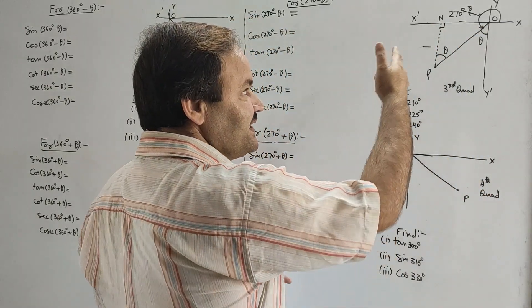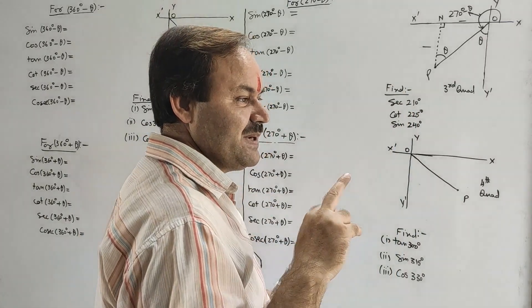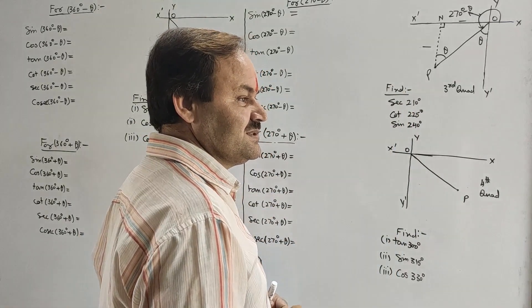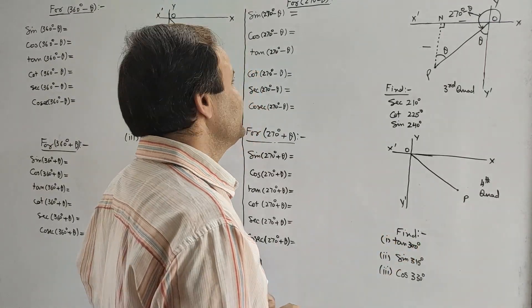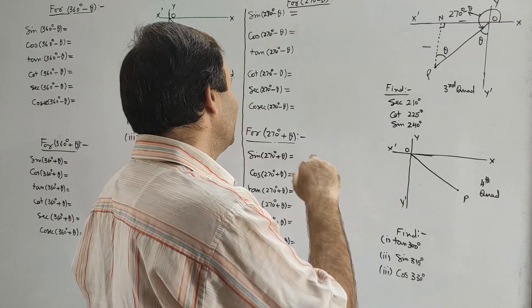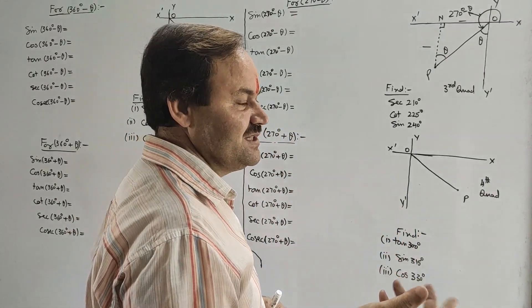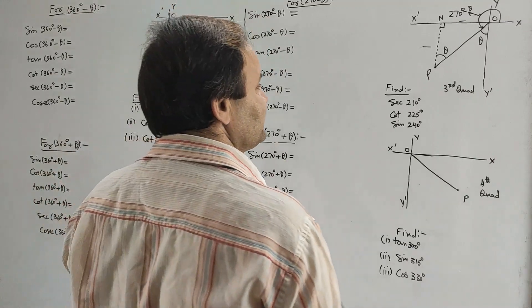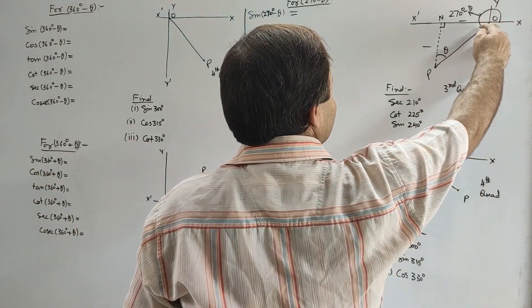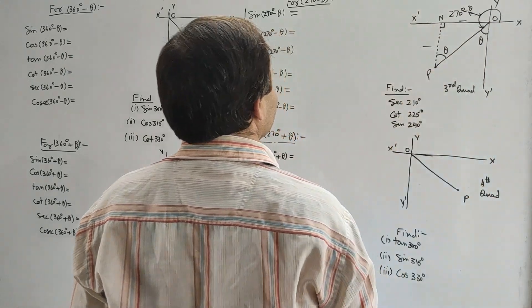Hence, in the case of 270°, perpendicular and base interchange. Due to this interchange, sin and cos, tan and cot, sec and cosec will all interchange. If we calculate sin(270° - θ), the perpendicular PN is negative, so it gives minus PN upon hypotenuse OP. For angle θ, PN is the base and OP is the hypotenuse, which is positive since θ is acute. So sin(270° - θ) = minus cos θ.